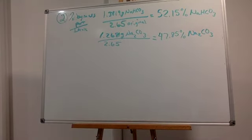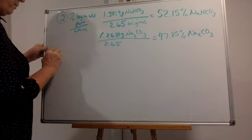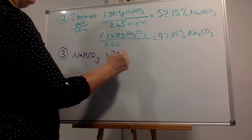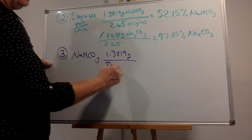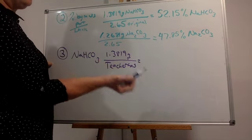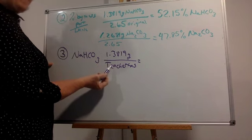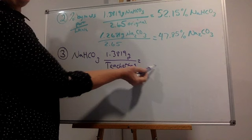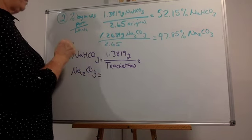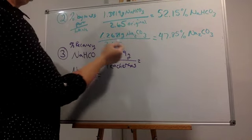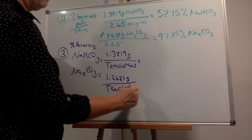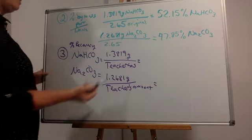Question number three is percent recovery. Percent recovery is what you got divided by what the teacher has. For sodium bicarbonate, you got 1.3819 grams divided by the teacher's value. If I gave you 1.38 grams, you'd get 100% recovery, meaning you didn't lose anything. But if I gave you 1.8 grams, you'd do 1.38 divided by 1.8 for some percent recovery. For sodium carbonate, percent recovery would be 1.2681 divided by the teacher's amount.